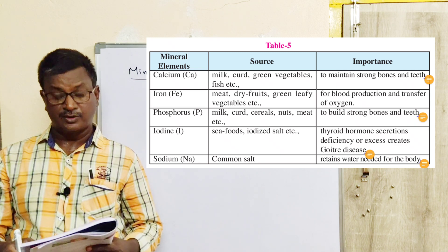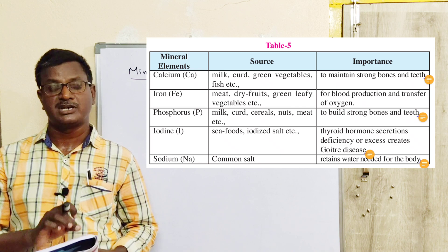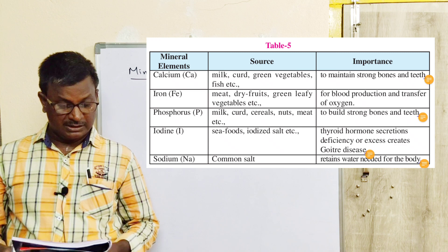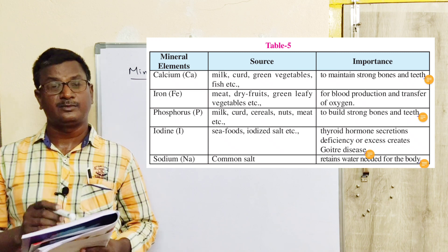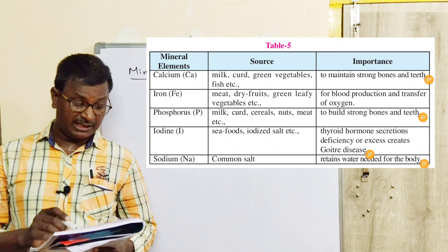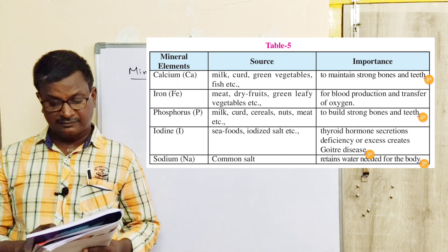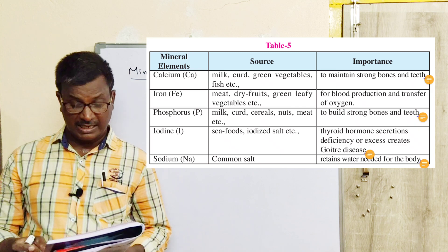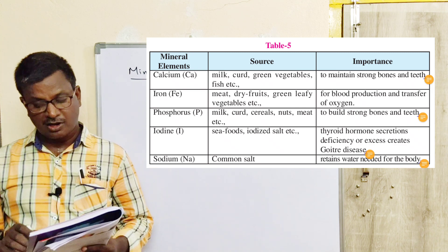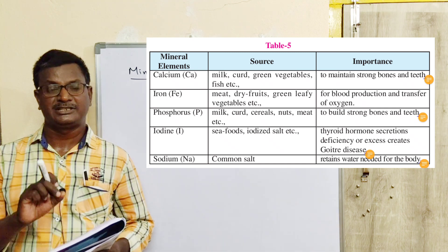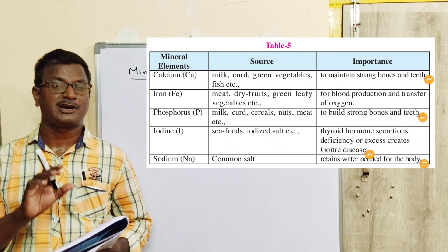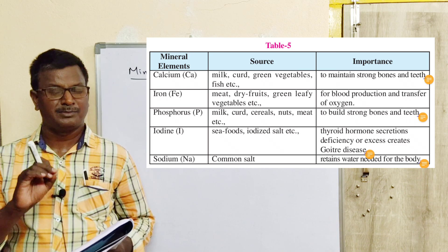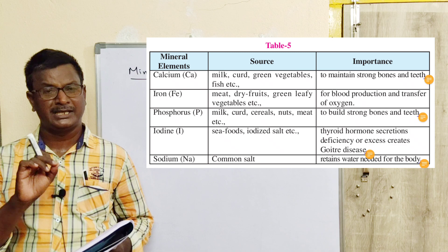The mineral table shows mineral elements, sources, and importance. Calcium sources: milk, curd, green vegetables, and fish. Importance of calcium: to maintain strong bones and teeth. Calcium is very important to keep our bones and teeth strong. Calcium, magnesium, and phosphate are the main components of bones.